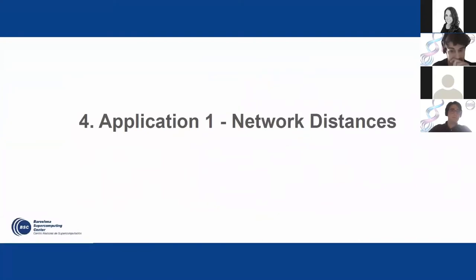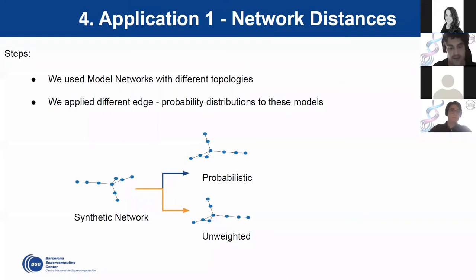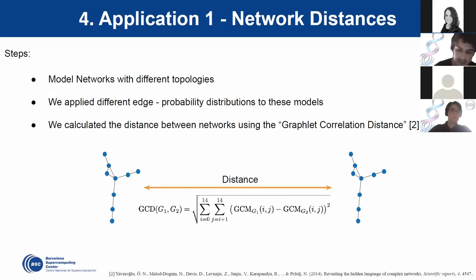The first application is network distances. For this application, we use different synthetic networks from different models, each with a concrete structural topology. For each synthetic network we created two versions: one probabilistic and one unweighted. In the probabilistic case, we randomly sampled probabilities from real distributions and assigned them to connections. Then using normal graphlets or probabilistic graphlets, we compute the graphlet correlation distance.